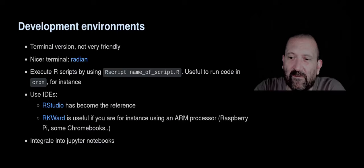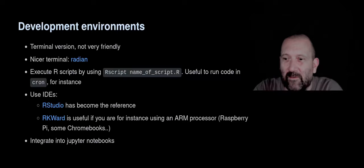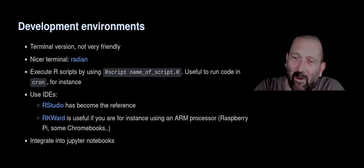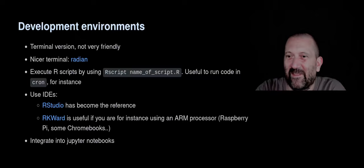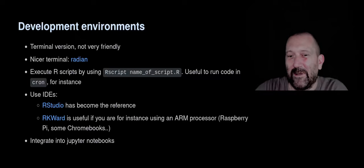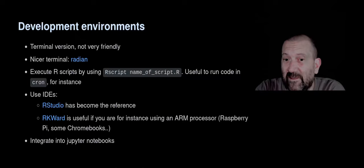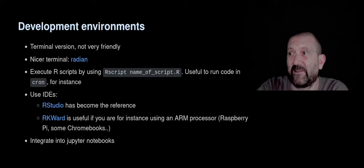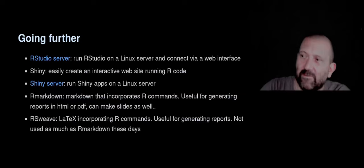RKWard would be what you'd choose if you're using an ARM processor — for example with Raspberry Pis or Chromebooks — where RStudio is not distributed as a compiled interface. Compiling it from sources takes an extremely long time on a small Raspberry Pi, so you'd end up using RKWard. R also integrates with Jupyter notebooks, and I'll show you a brief example of doing this.